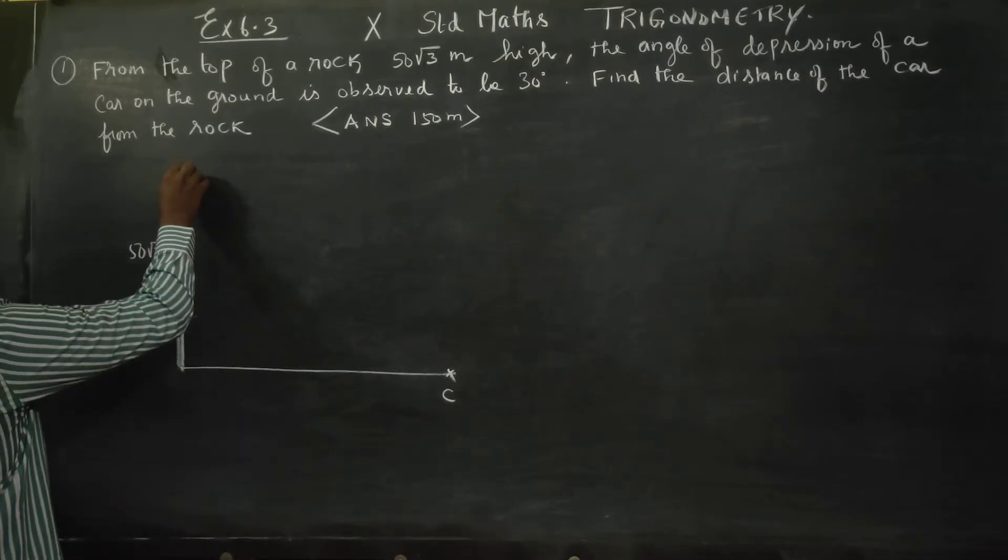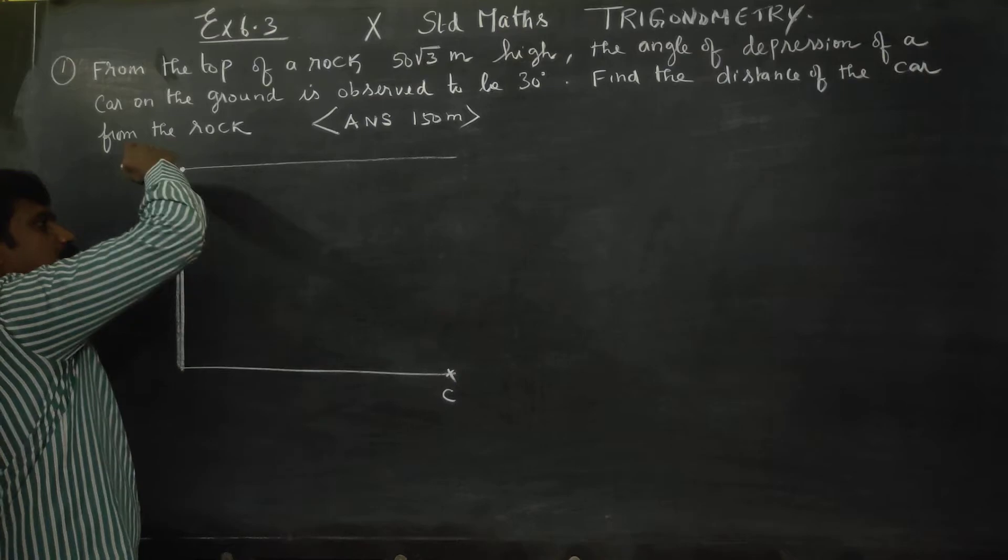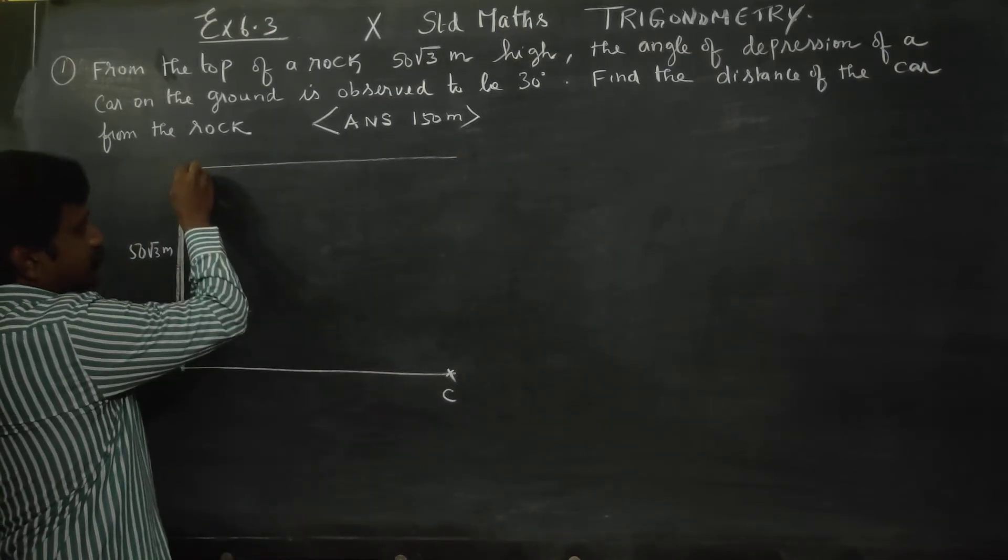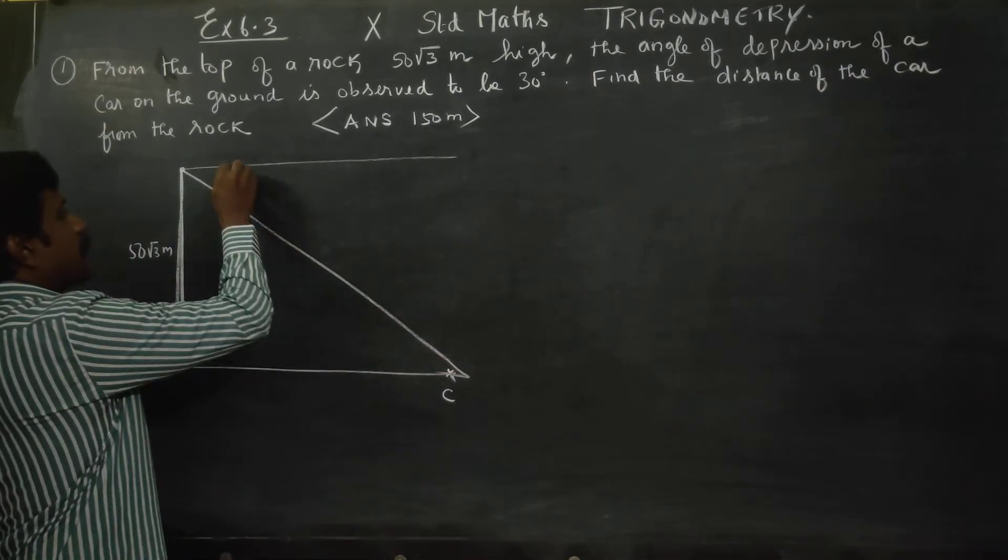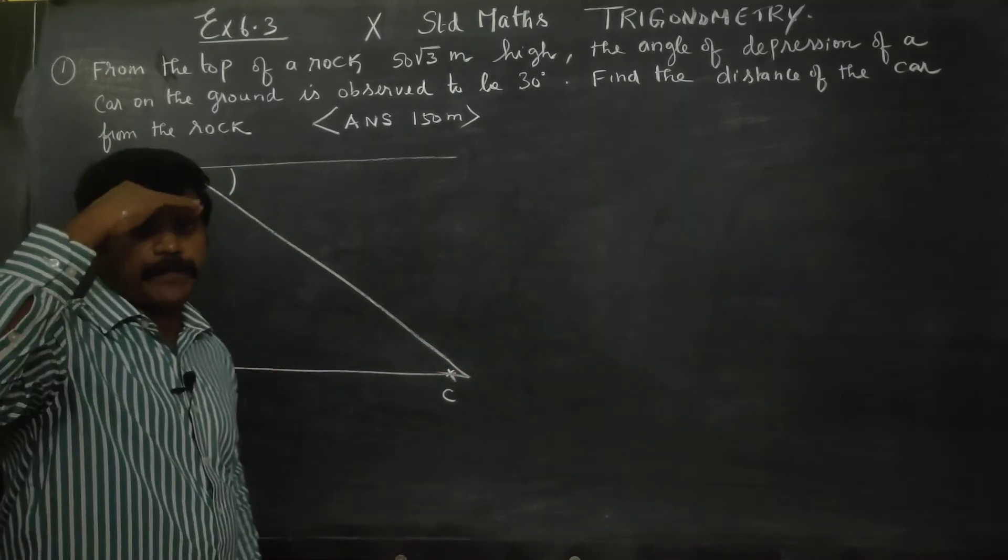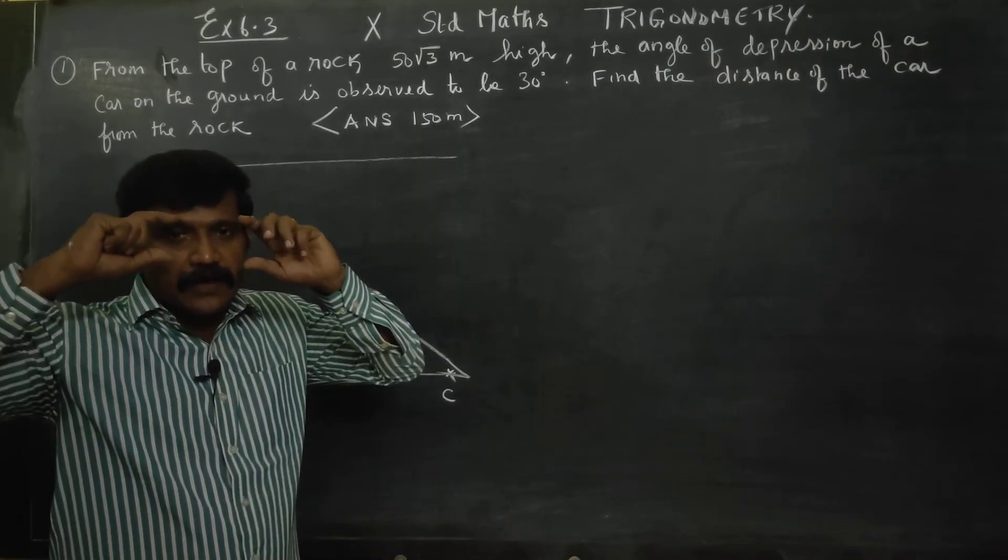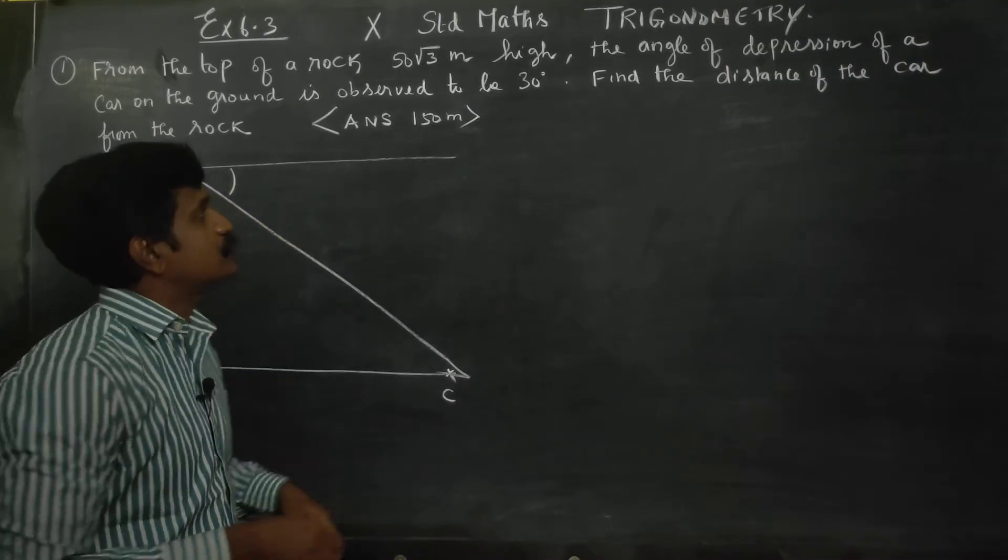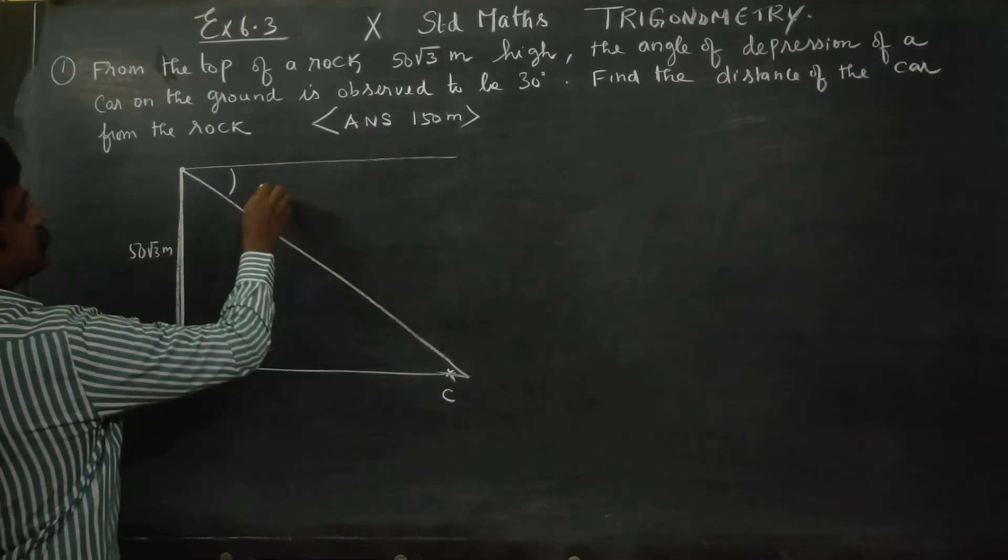The angle of depression of the car, it is a line of vision, line of sight. This is the angle of depression of the car, which is 30 degrees.